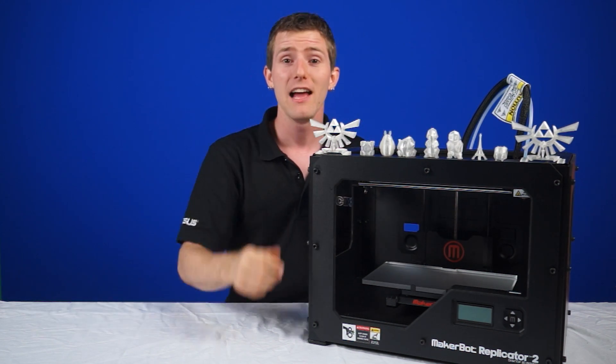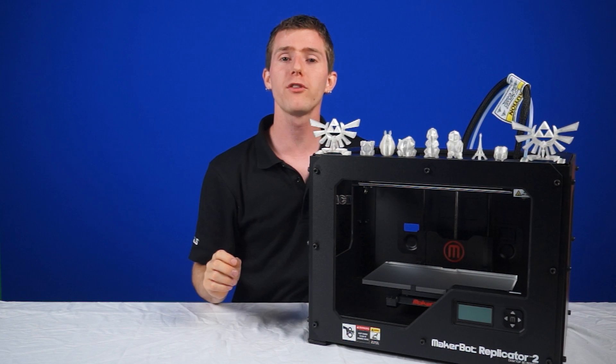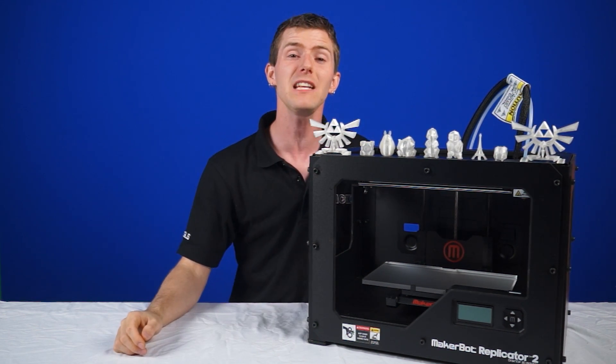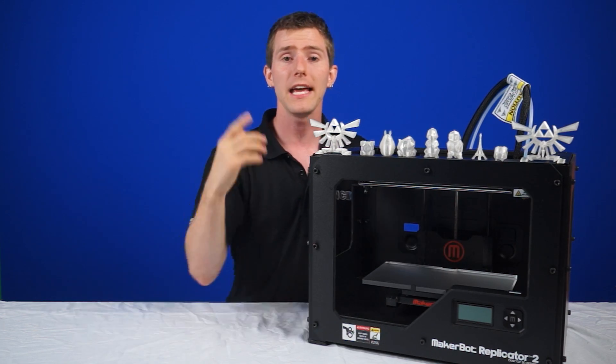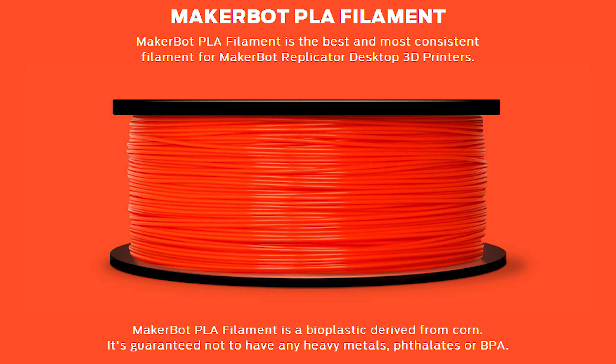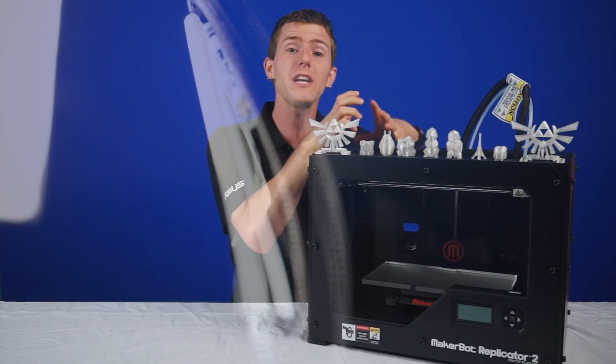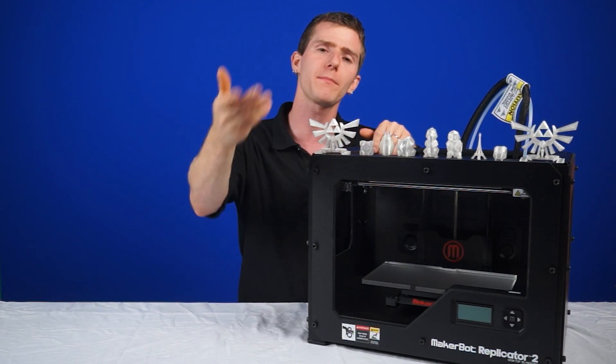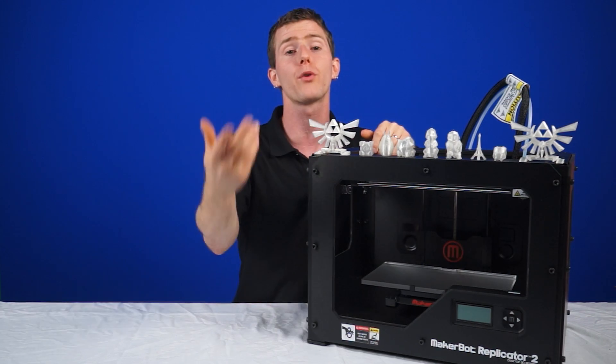It can print objects up to 28.5 centimeters long, that's about 12 inches, by 15.3 centimeters wide by 15.5 centimeters high. It uses MakerBot PLA filament, which is a high-quality bioplastic derived from corn. So it doesn't even smell like burning plastic like you would expect. Some of the tech tips team noted that it also smelled a bit like a hot glue gun. This printer also supports MakerBot flexible filament, which is different in that prints can be warmed and then reshaped and molded. And that would be something that would be more useful for prototyping.